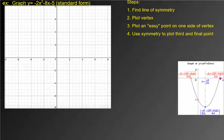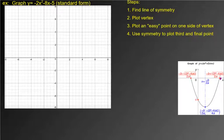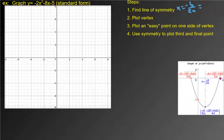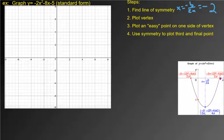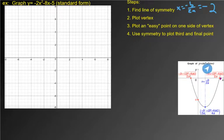Graphing standard form is probably the most tedious one — it just has the most work. First you have to get the line of symmetry, which uses the formula negative b over 2a. In this problem, b is negative 8 and a is negative 2, so if you plug that in you get negative 2. The negative b over 2a actually comes out of the quadratic formula.